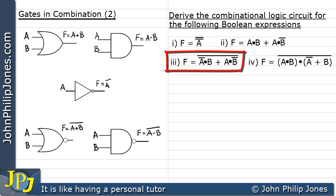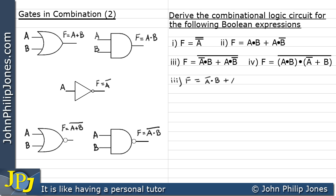Let's now derive the combinational logic circuit for the next Boolean expression. F equals NOT((NOT A AND B) OR (A AND NOT B)). I have NOT A, which will be produced by input A going through a NOT gate, ANDed with B. That is OR'd with A AND NOT B, where NOT B comes from B going into a NOT gate. The NOT across the top combined with the OR tells me I'm going to be using a NOR gate.